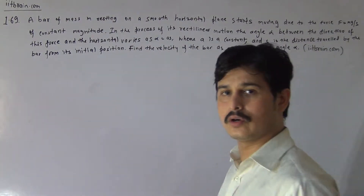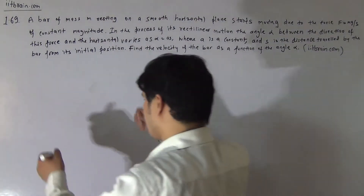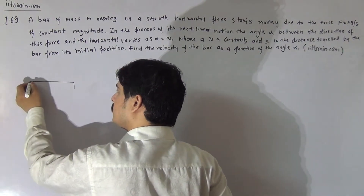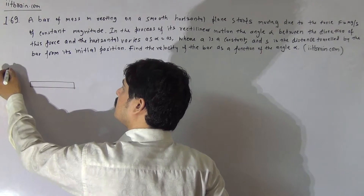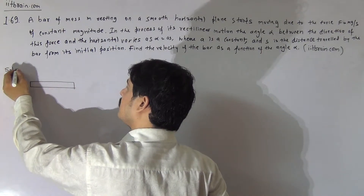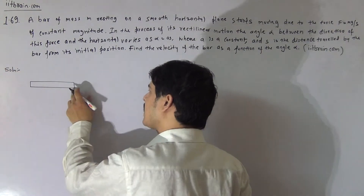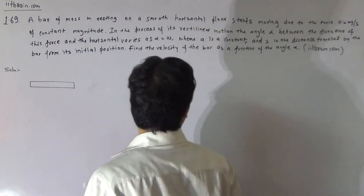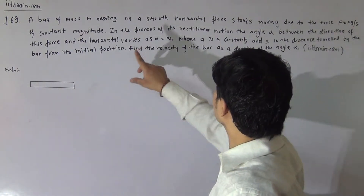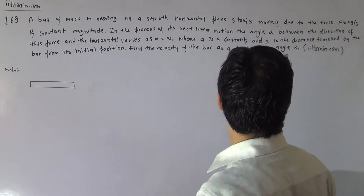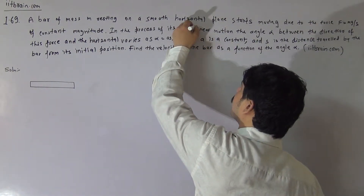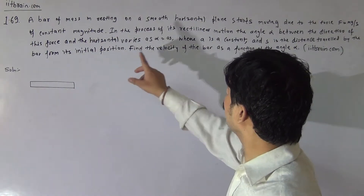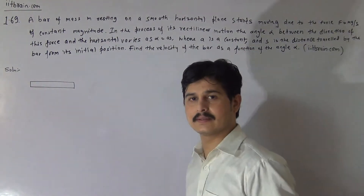We need to find the velocity of the bar as a function of s. So let this be the bar and force is acting on this bar. Initially the force is Mg by 3 and it is given that in the process of its rectilinear motion the angle alpha between the direction of this force and horizontal varies as alpha equal to a times s.